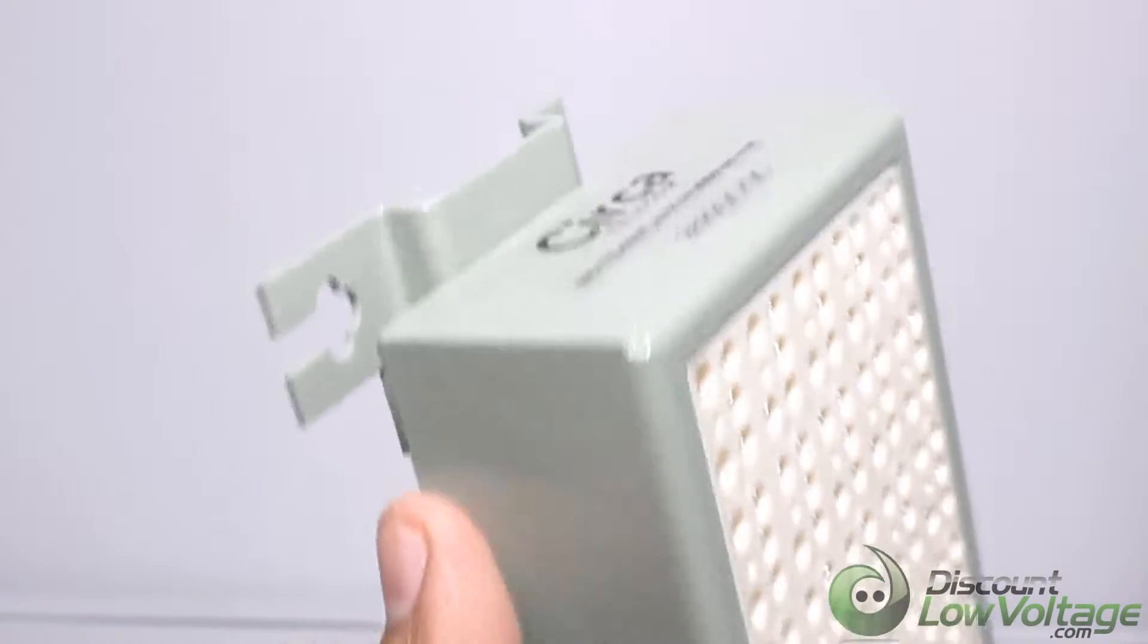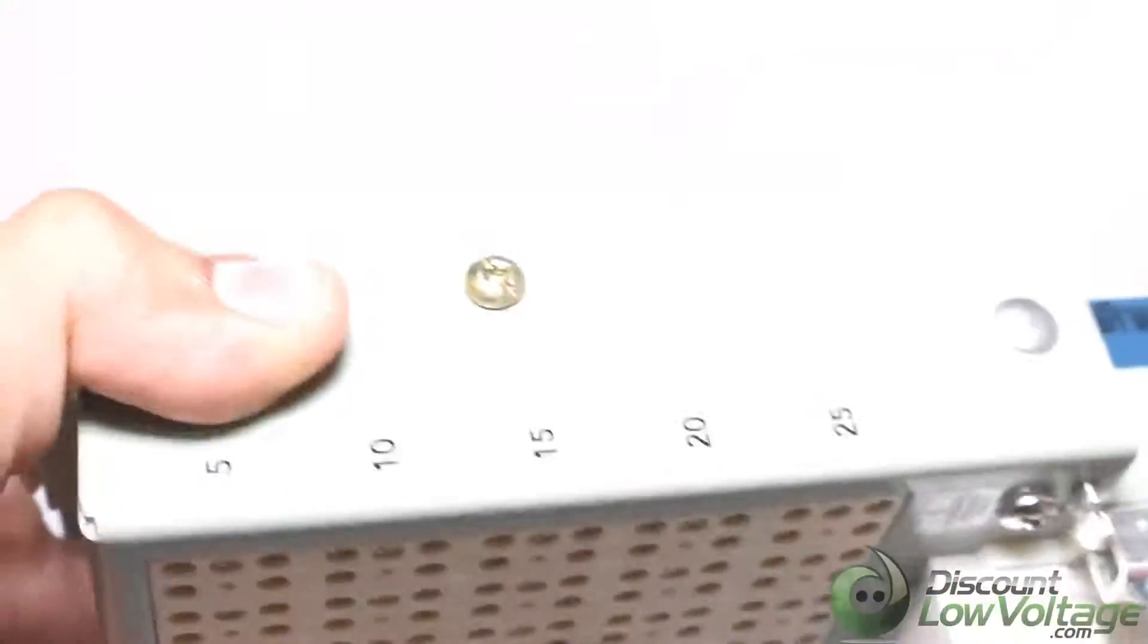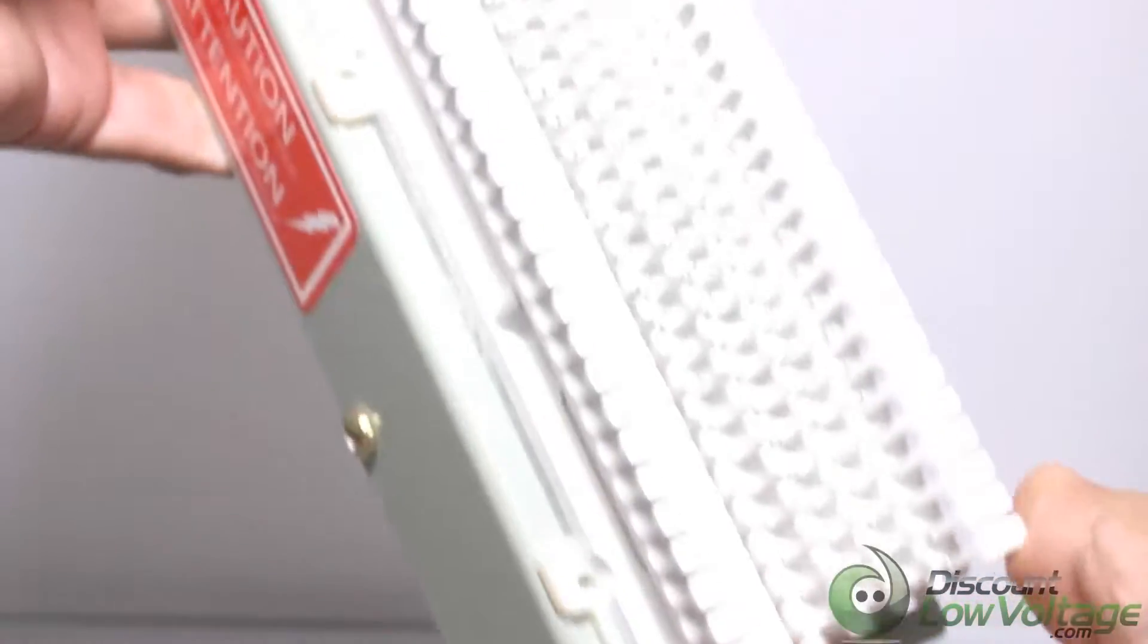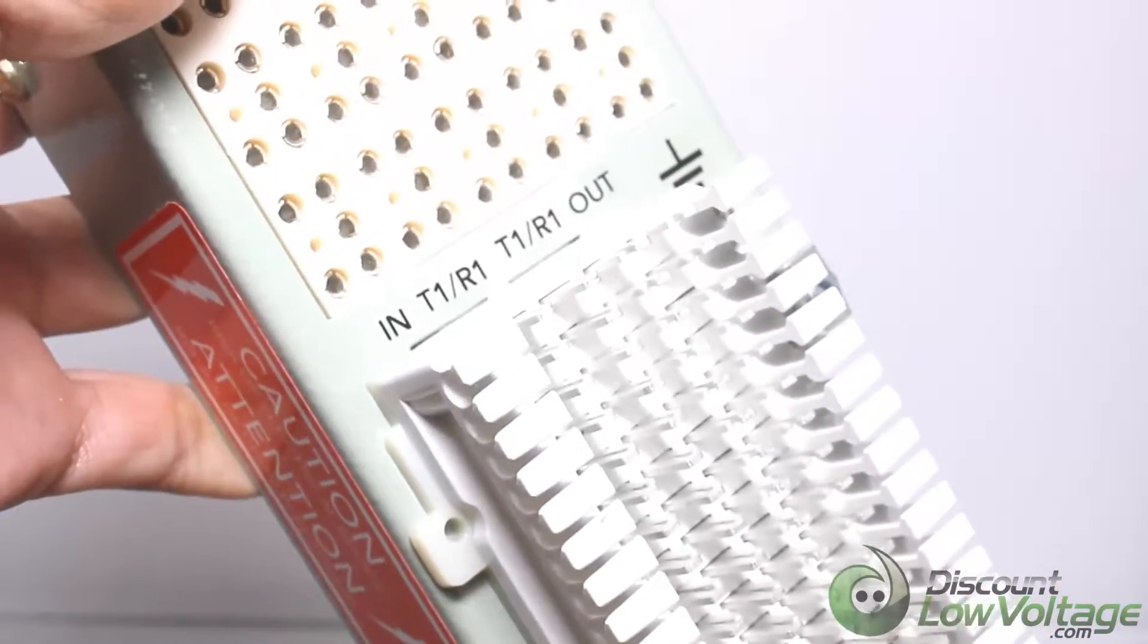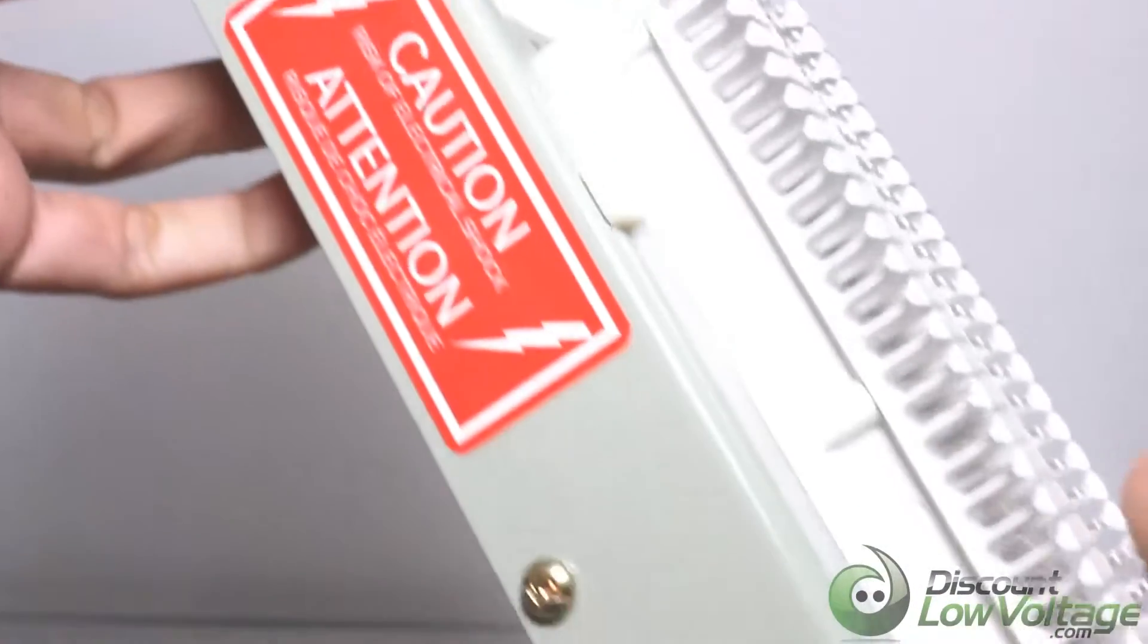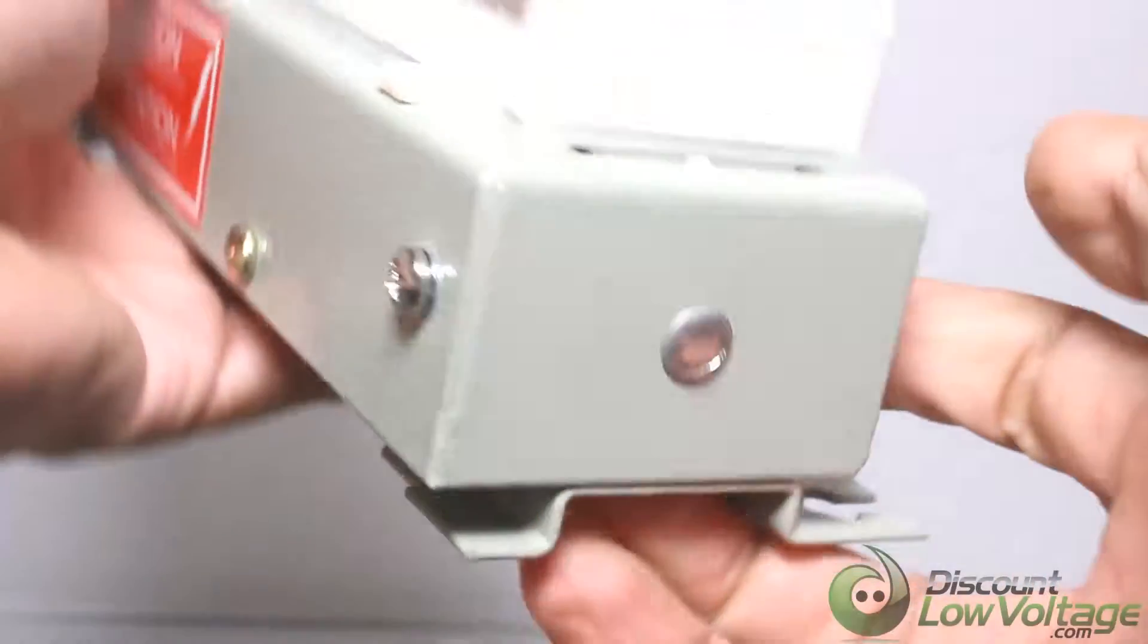The 2625 QCQC 25 pair lightning protected 66 block features 16 gauge steel building entrance terminals with reliable 66 block style quick clip connectors for both input and output terminals. Connectors can accept up to 18 gauge line termination. Also included are multiple external and internal ground lugs, as well as splice chambers and various types of security covers.